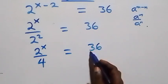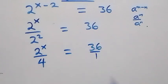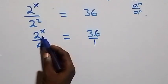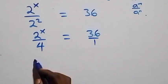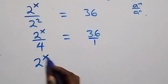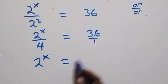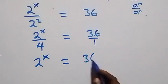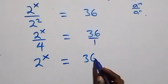This also becomes 2 raised to power x over 2 squared, that's 4, equals 36 over 1. When we cross multiply, 2 raised to power x times 1 gives us 2 raised to power x equals 36 times 4.